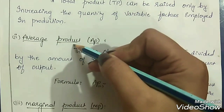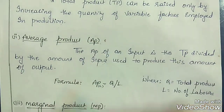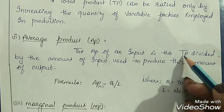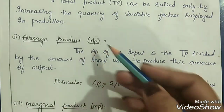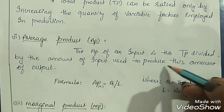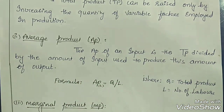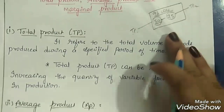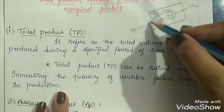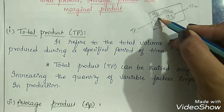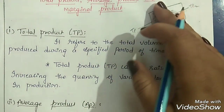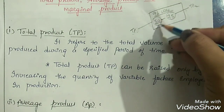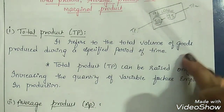Next, we have average product, also known as AP. The average product of an input is the total product divided by the amount of input used to produce that output. When we divide our total product by the number of inputs used, we get the average product.